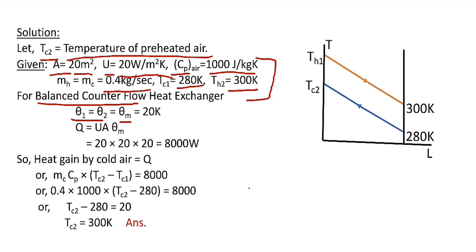The temperature profiles of hot air and cold air are parallel to each other. So the temperature difference at outlet, theta 2 = 300 minus 280 = 20 Kelvin. Therefore, theta 1, theta 2, and theta M all equal 20 Kelvin.